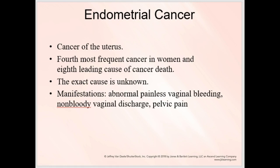Endometrial cancer is cancer of the inner lining of the uterus, and I was surprised to see this is the fourth most frequent cancer in women. The exact cause is unknown, but those cells lining the inside of the uterus are constantly changing. With highly mitotic cells, there are more chances for abnormalities, leading to cancer. Manifestations include abnormal painless vaginal bleeding, bleeding at times other than the menstrual cycle, non-bloody vaginal discharge, and pelvic pain — and probably pain with intercourse as well.